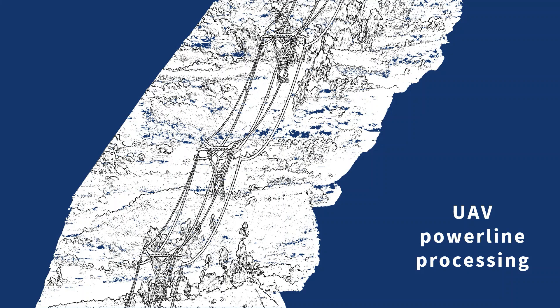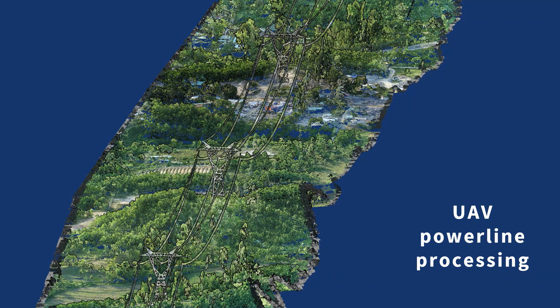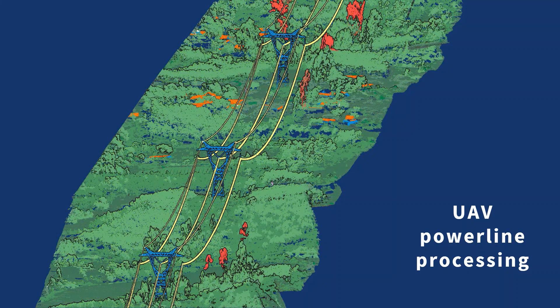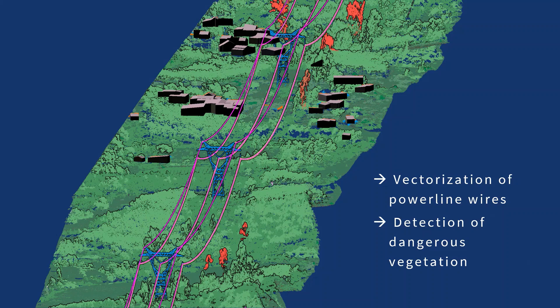Another example is power line maintenance projects. Raw point cloud classification extends to wire and pylon classification and detection of objects in the clearance zone. One key goal is to get vectorized wires — vectors follow the point cloud, combining wire detection with vectorization and wire point classification. These vectors can be exported for simulation. Another task is detection of dangerous objects too close to the power line, such as buildings or dangerous vegetation assessed by falling tree logic.